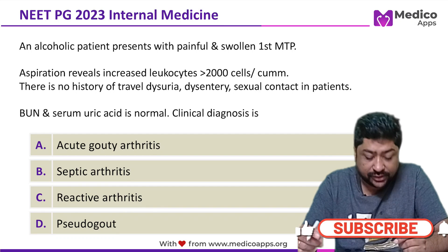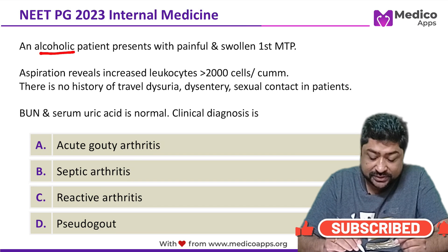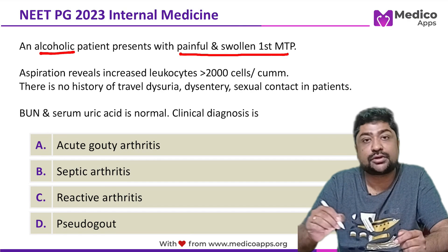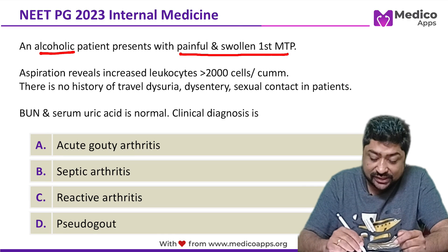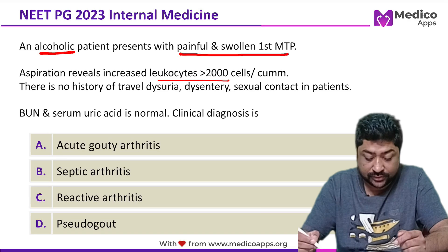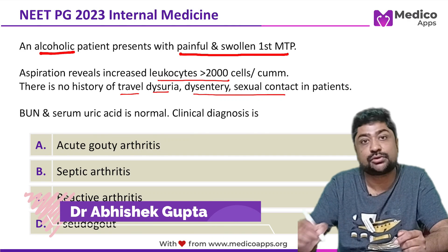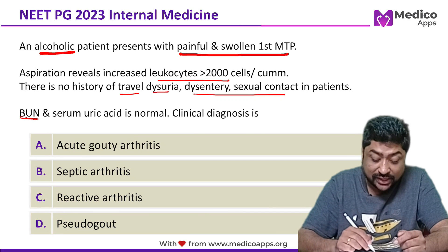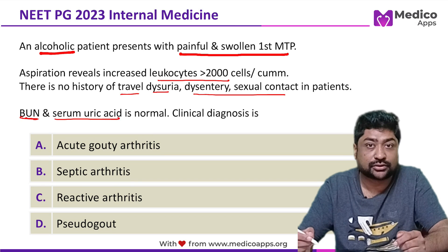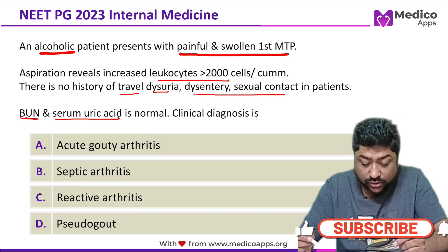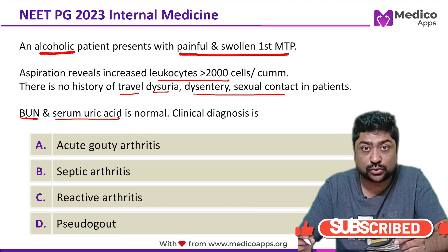This question appeared in NEAT PG 2023. The question describes an alcoholic patient who presents with a painful swollen first metatarsophalangeal joint. The aspiration of the joint reveals increased leukocyte count. There is no history of travel, dysuria, dysentery, or sexual contact in this patient. Blood urea nitrogen and serum uric acid both are normal. What is the clinical diagnosis? Options are acute gouty arthritis, septic arthritis, reactive arthritis, and pseudo-gout.